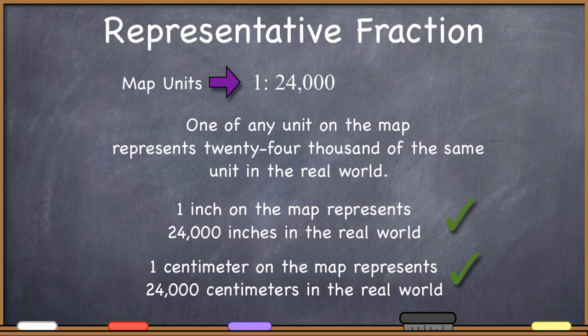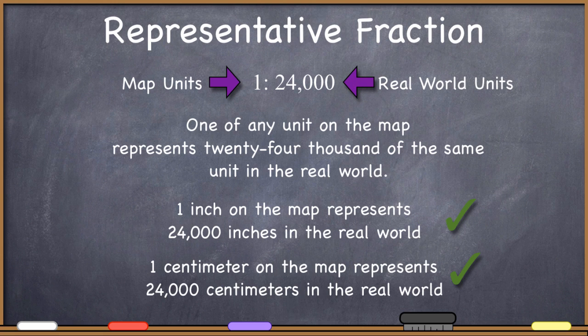Over here on this side, the 1 is the units on the map. You always give the units on the map first. And then over here you give the real world unit. So 1 unit on the map, 24,000 of the same unit in the real world.